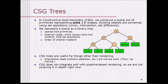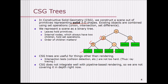CSG — constructive solid geometry — constructs a scene out of primitives representing solid 3D shapes. Existing objects are combined using set operations: union, intersection, and set difference. The leaves are primitive 3D shapes and the nodes are set operations. We represent the scene as a binary tree where the leaves hold primitives and internal nodes, which always have two children, hold set operations. The order of children matters.